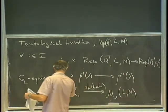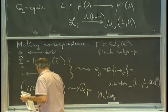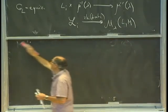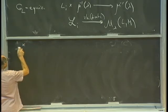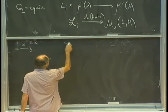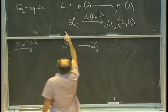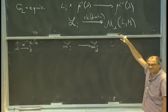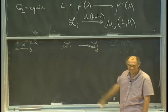We have one tautological bundle for each i, and they are related by completely canonical morphisms. Namely, if X is an arrow from i to j in Q (or Q bar), then it gives an absolutely canonical morphism from curly L_i to curly L_j, because by construction it gives a map from L_i to L_j as vector spaces. A point in the base is a quadruple (X, X star, I, J), and on the fiber over that quadruple the map is given by X or X star. So there are completely canonical maps.